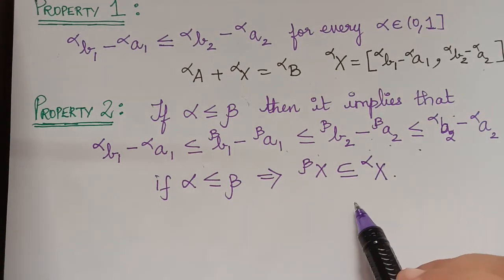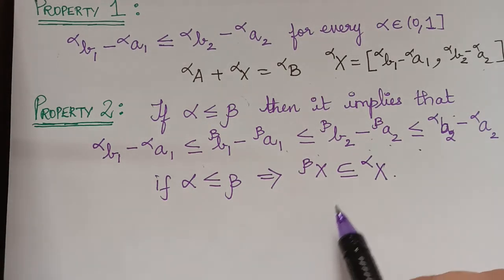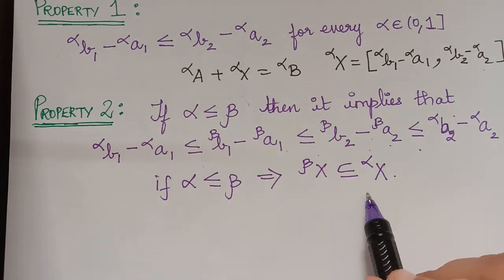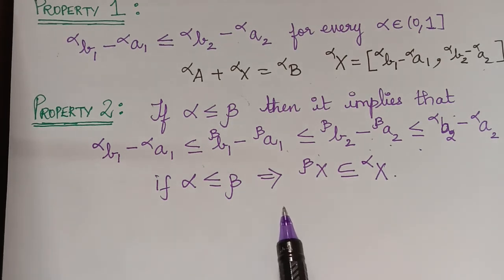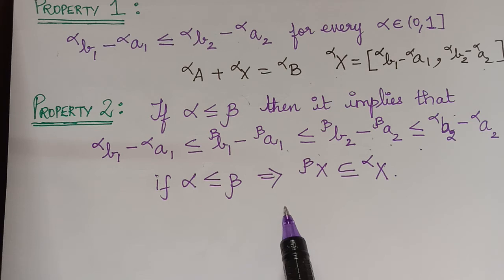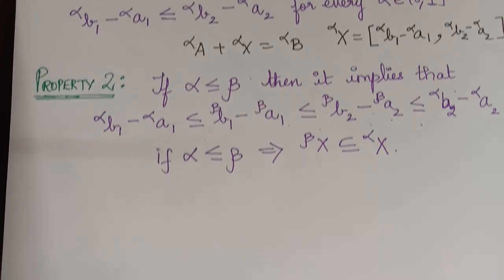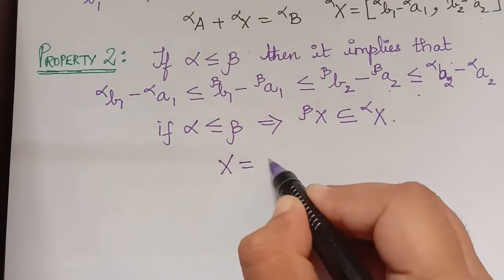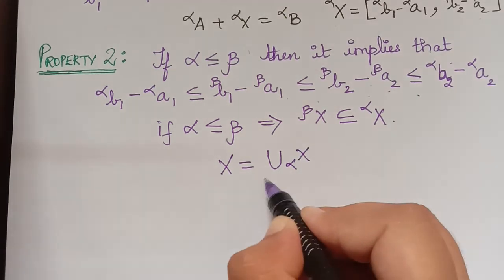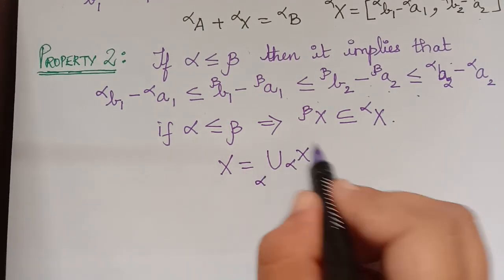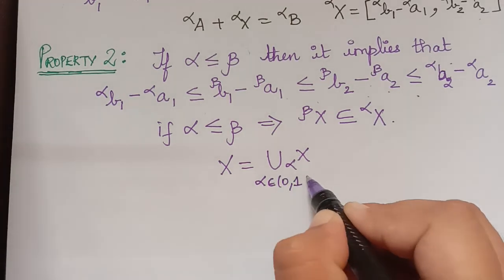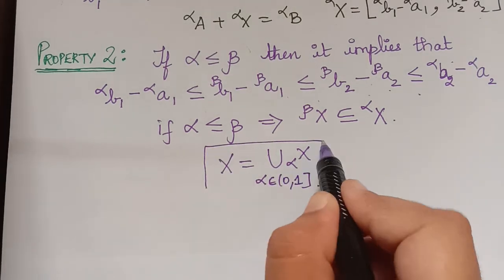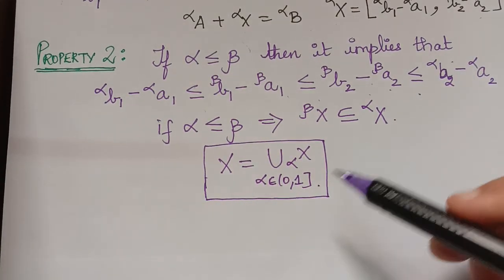If a solution [x]_alpha exists for every alpha in (0, 1] and property 2 is satisfied, then the solution x of the fuzzy equation is given by x = union over all alpha in (0, 1] of the corresponding special fuzzy sets. This was established in a previous theorem. Hope you have understood these concepts. Thank you.